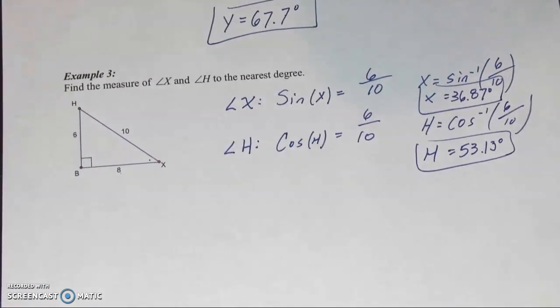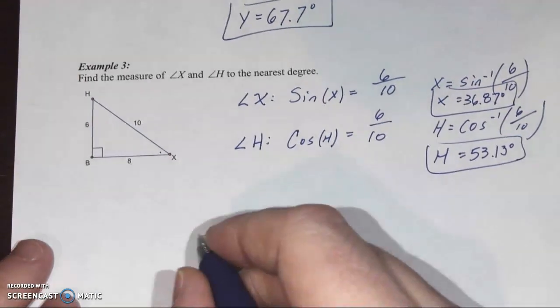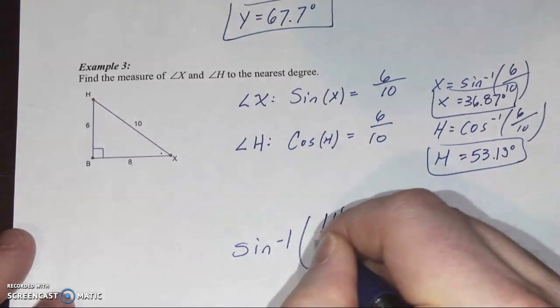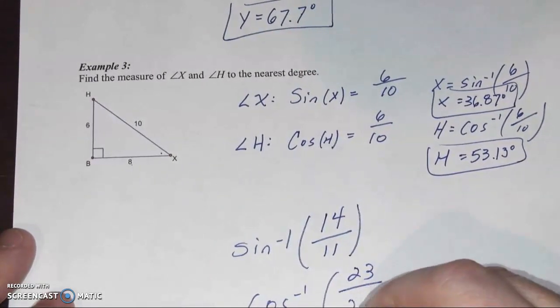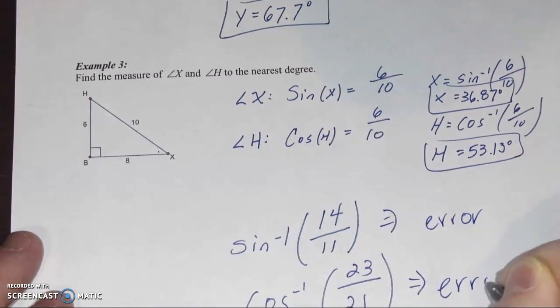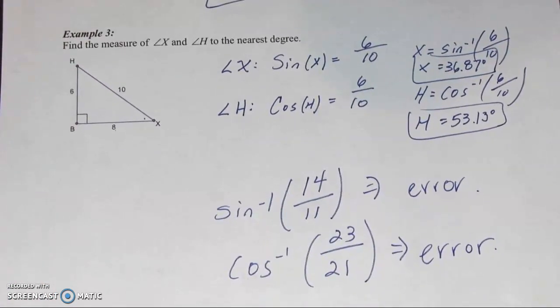What I'd like you to do, if you're curious, and if you want a little bit of a next level thinking, if you typed in sine inverse of 14 over 11 or cosine inverse of 23 over 21, what your calculator would say is that there's an error. If you'd like, think about maybe why that is. And if you're really curious, you can ask during office hours. But the moral of the story for this set of notes, when we're looking for the angle measure, we set up the trig function. We use inverse trigonometry. The moral of the story.